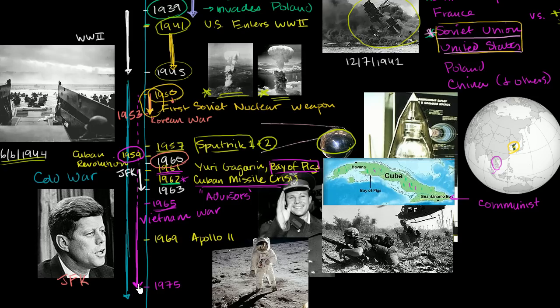Fast forward all the way to 1975 — this is significant because, other than being one of the more recent major wars the United States has been in, it's the first war the United States kind of unambiguously lost. In 1975, the last US presence left, and essentially Saigon — the capital of South Vietnam — fell to the communists. So I'll leave you there; we're now essentially in modern history, at least from my point of view, since I was born not too long after that. Hopefully you found that interesting.